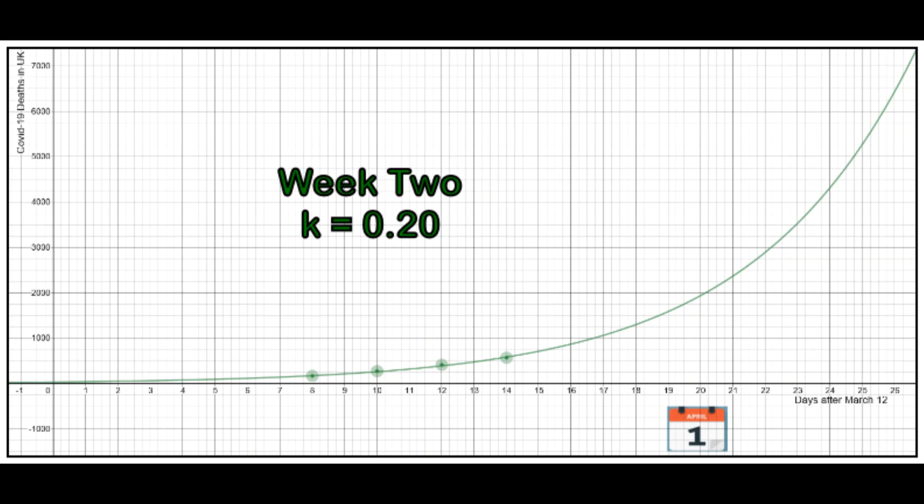Encouragingly, although, of course, the cumulative death total continued to rise in week two from March the 19th to March the 26th, the exponential growth constant drawn from those trends was considerably lower, about 0.20. That means between week one and week two it looks like we are flattening the curve.